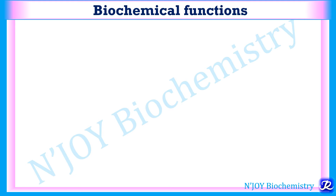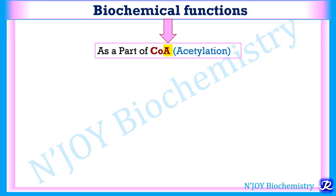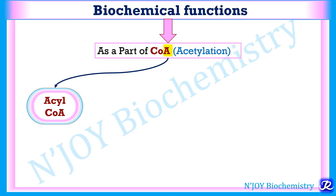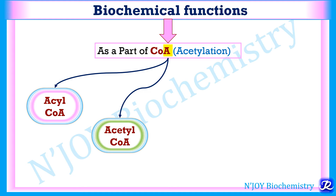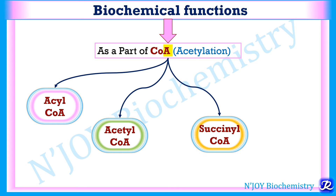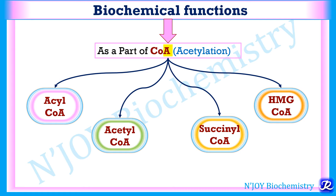The biochemical functions of pantothenic acid are exerted through coenzyme A — where 'A' stands for acetylation. Coenzyme A plays a unique role in integrating various metabolic pathways of carbohydrates, proteins, and lipids, and more than 70 enzymes depend on it. When acyl groups like free fatty acids are linked to coenzyme A by a thioester bond, they form acyl-CoA; when acetyl groups (two-carbon compounds) are linked, they form acetyl-CoA; succinate linked forms succinyl-CoA; and HMG linked forms HMG-CoA.